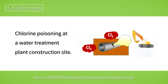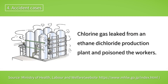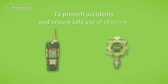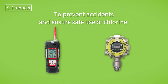In another case, due to an error in the programming of a plant control computer, raw material chlorine gas leaked into the atmosphere at an ethylene dichloride manufacturing plant, causing chlorine gas poisoning.